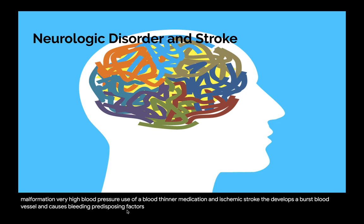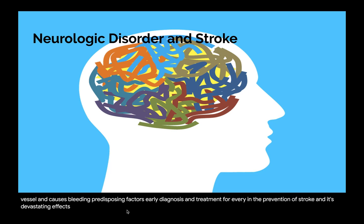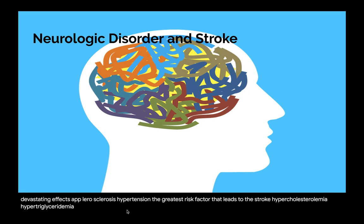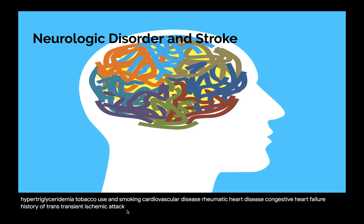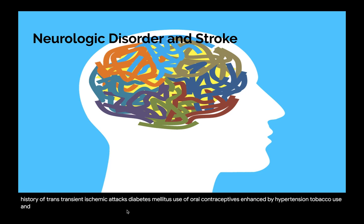Early diagnosis and treatment for control of predisposing factors are necessary in the prevention of stroke. These factors include atherosclerosis, hypertension (the greatest risk factor), hypercholesterolemia, hypertriglyceridemia, tobacco use and smoking, cardiovascular disease, rheumatic heart disease, congestive heart failure, history of transient ischemic attacks, diabetes mellitus, use of oral contraceptives (especially enhanced by hypertension, tobacco use, and age over 35), and drug use — especially in adolescents and young adults.